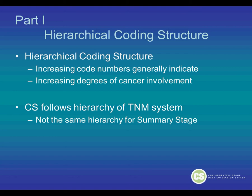The Hierarchical Coding Structure in Collaborative Stage means increasing code numbers generally indicate increasing degrees of cancer involvement. Collaborative Stage follows the hierarchy of the AJCC TNM system. This is not the same hierarchy for Summary Stage.